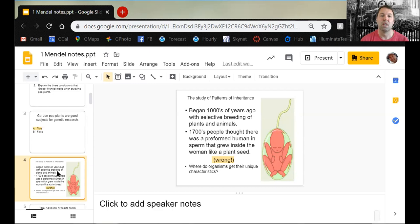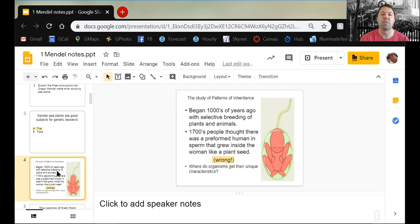In the 1700s, we started to make a little more progress. We thought that people were preformed inside of a sperm, which is shown here in this diagram. Does that look right to you? This was totally wrong. Instead, we're going to look at the genetic material, which is found inside the nucleus of every cell in the form of chromosomes and genes.